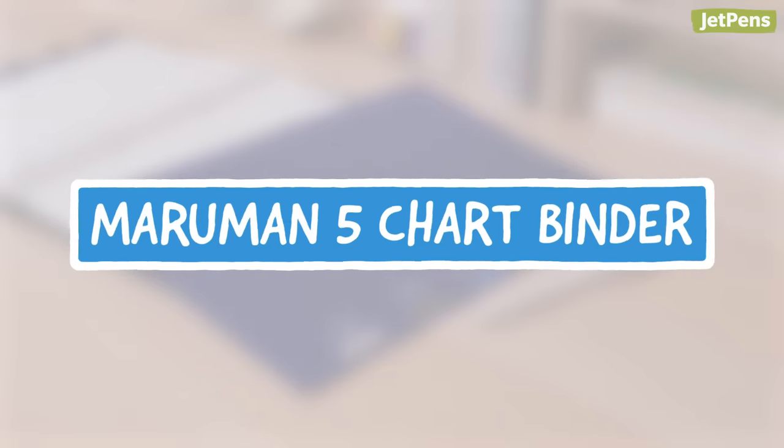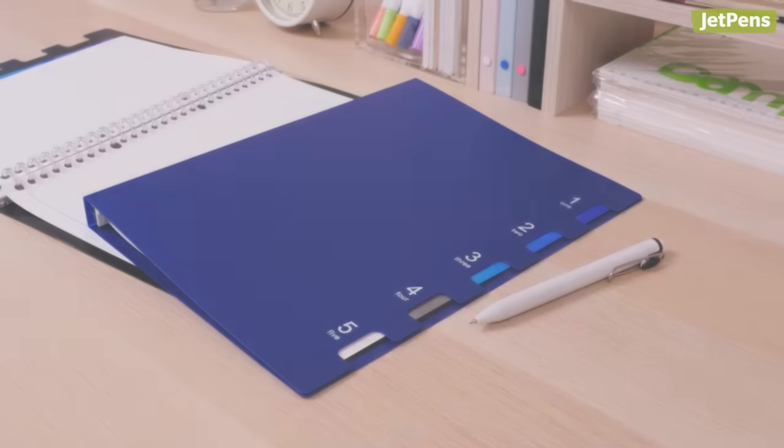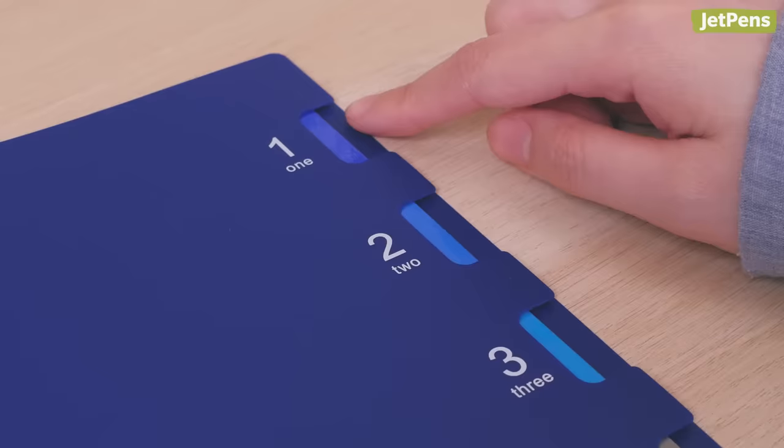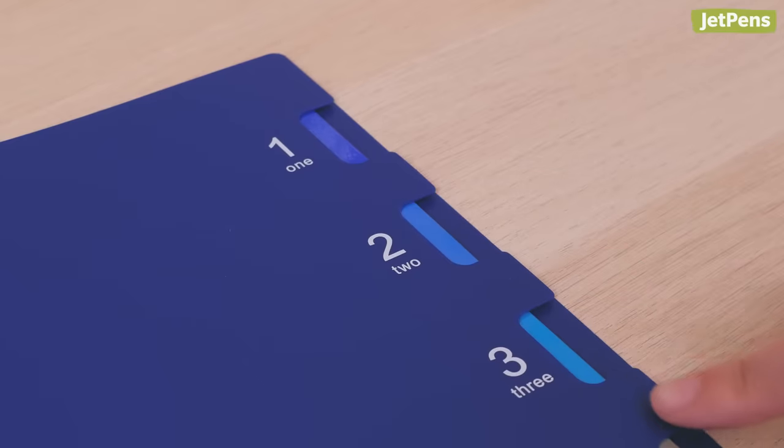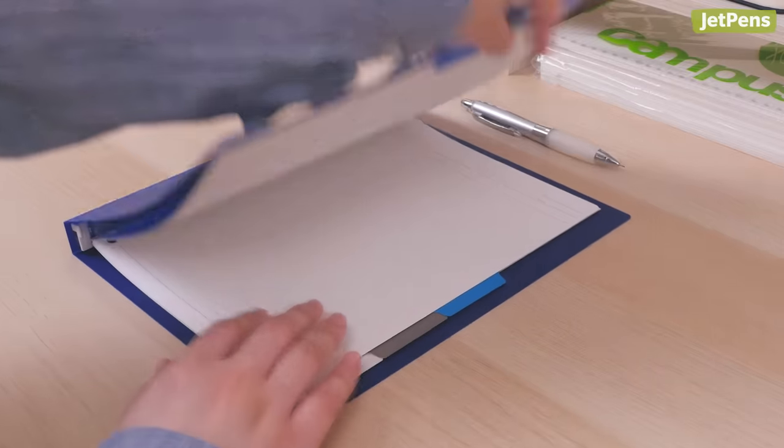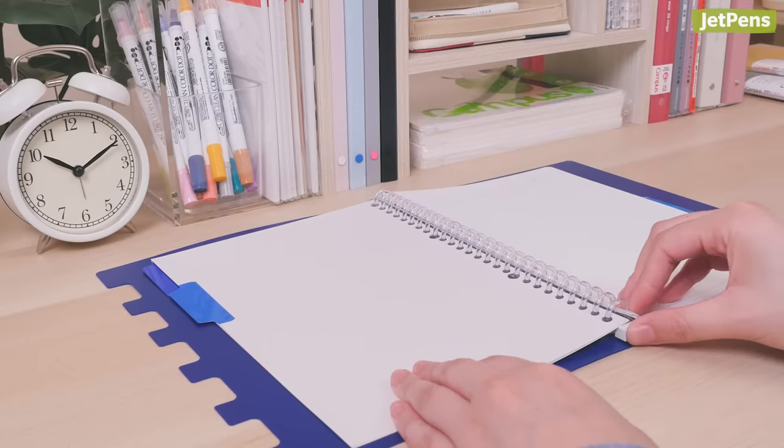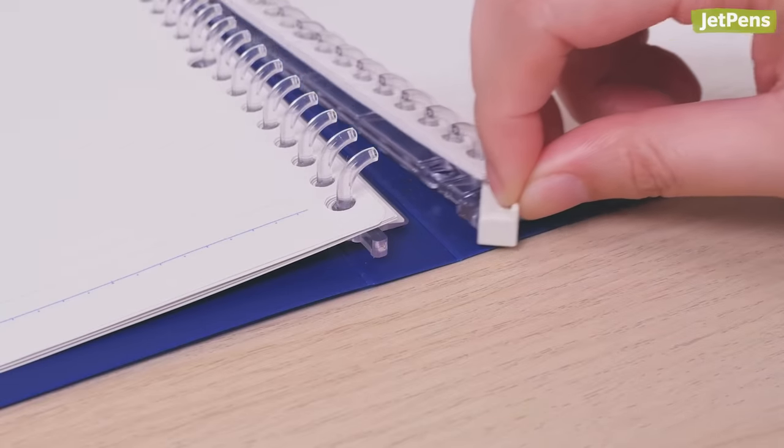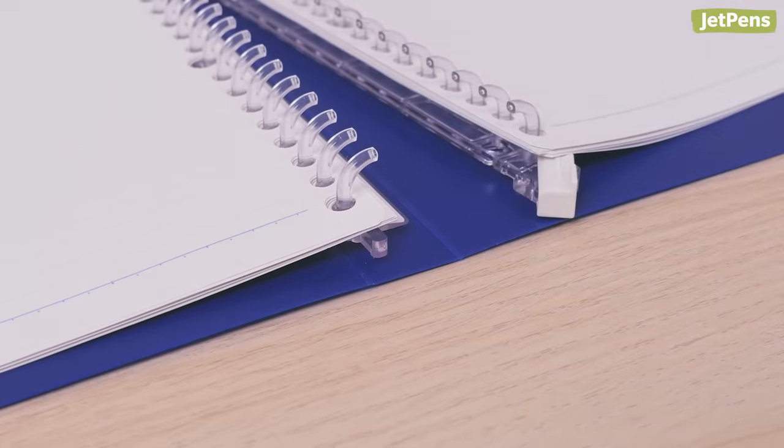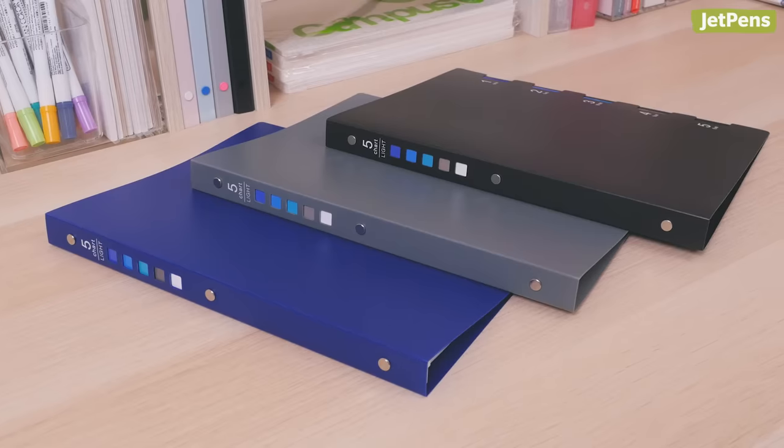How clever are these Maruman 5-chart binders? They have small cutouts in the cover, so you can flip right to the section you're looking for. Just grab the index tab, and voila! The rings are super easy to open, too. Unhook the white tab on the bottom of the binder, and the rings slide apart. These binders come in three muted colors.